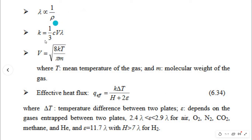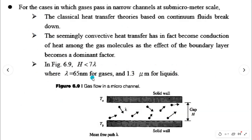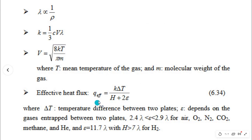λ equals 65 nanometers for gases and 1.3 micrometers for liquids. The equation for λ is: λ is proportional to 1/ρ. And k equals (1/3) times C times v times λ. The equation for molecular velocity v is: v equals the square root of 8kT divided by πm, where T is the mean temperature of the gas and m is the molecular weight.